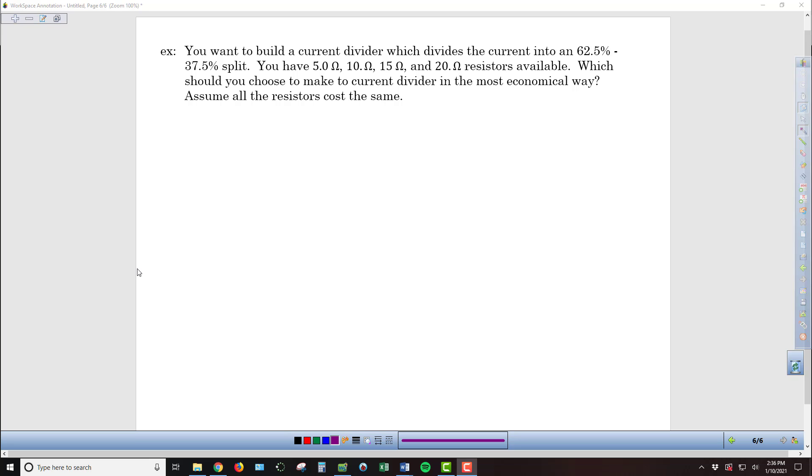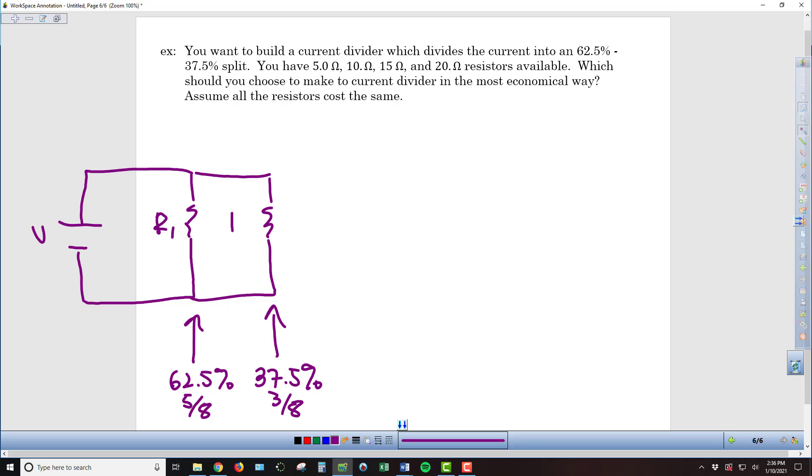So in the circumstance described here, we want the current that's flowing from a battery to be split into two separate pathways, where the pathway here has 62.5% of the current, so we'll call that R1, and the second pathway here has 37.5%. Or hopefully we recognize those in fraction terms, which will be a little bit easier for us to work with, as 5/8 and 3/8 of the current that's flowing out from our battery.